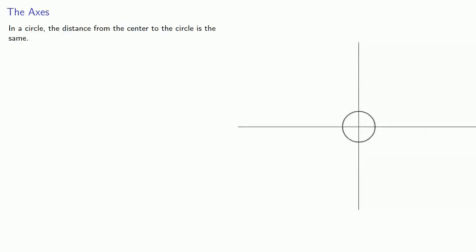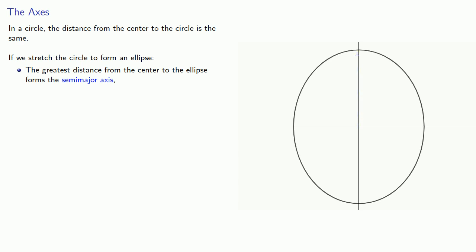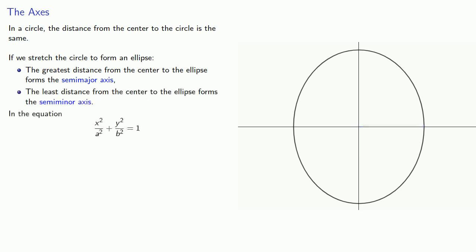In a circle, the distance from the center to the circle itself is the same. But if we stretch the circle to form an ellipse, the greatest distance from the center to the ellipse forms the semi-major axis, and the least distance from the center to the ellipse forms the semi-minor axis. In the equation, since a and b represent the horizontal and vertical stretches, these semi-major and semi-minor axes will correspond to the greater and lesser of the values a and b.